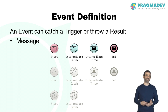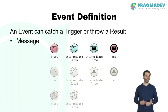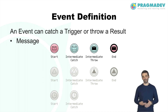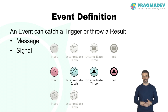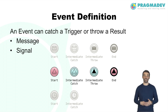Messages are used to describe communication between different processes — this is a one-to-one type of communication. A message can be thrown by an intermediate or end event, and caught by start and intermediate events. Signals are used for broadcast communication within and across processes — a one-to-many type of communication. A signal can be thrown by intermediate and end events, and caught by start and intermediate events.